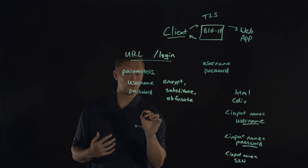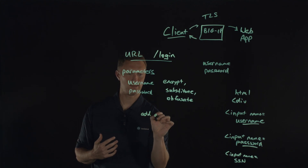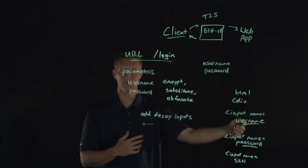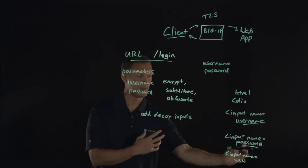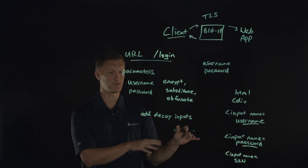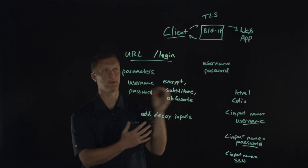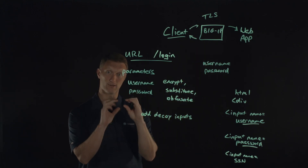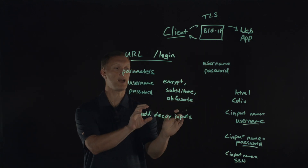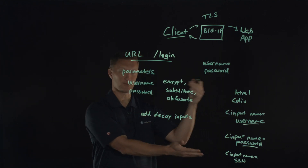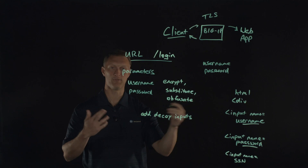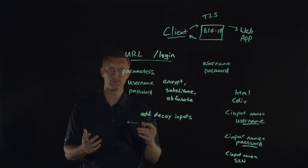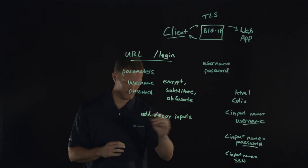Another thing you can do is add decoy inputs. Remember how the attacker could add an input name to trick you into providing more information? The BIG-IP can turn the tables on them. As the attacker looks at the HTML building out the page and tries to target certain parameters or input names, the BIG-IP will actually add these decoy inputs so the attacker has no idea which input name or parameter to even look at to try to steal from. It totally confuses them.